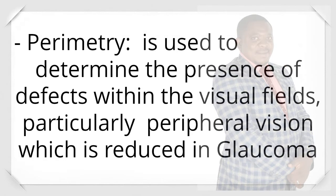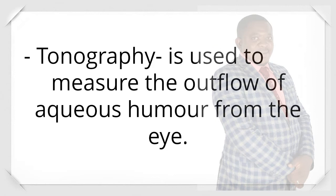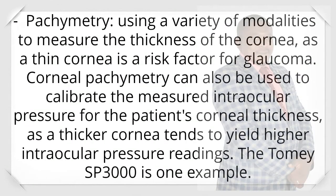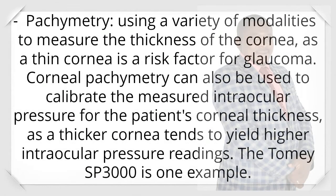Perimetry is used to determine the presence of defects within the visual fields, particularly peripheral vision which is reduced in glaucoma. Tonography is used to measure the outflow of aqueous humor from the eye. Ophthalmoscopy involves stereoscopically viewing the optic nerve head and the retina, looking for characteristic glaucomatous signs and changes in appearance over time; one important observation is the optic nerve's cup-to-disc ratio. Pachymetry uses a variety of modalities to measure the thickness of the cornea, as a thin cornea is a risk factor for glaucoma. Corneal pachymetry can also calibrate measured IOP for the patient's corneal thickness, as a thicker cornea tends to yield higher IOP readings. The TOMI SP3000 is one example.